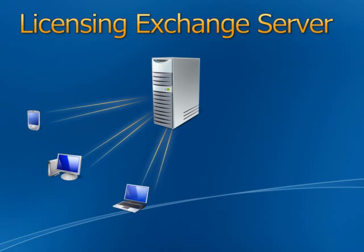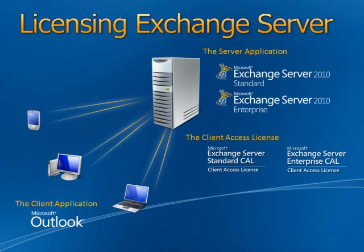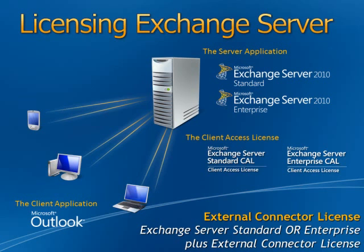Exchange Server is licensed following our normal Server-CAL licensing model. At the server end, you would need to purchase either an Exchange Server Standard Edition or an Enterprise Edition license, and assign that to the server running Exchange. The client to Exchange is Outlook, so for any device using Outlook to access Exchange, that would need an Outlook license, which can be acquired through the Office Suites — Office 2010 Standard or Professional Plus Edition already includes the Outlook license. CALs are required, and Exchange Server has both Standard and Enterprise CALs. You would need to purchase either just the Standard or both the Standard and Enterprise CALs, based on what functionality you want to access. There is also an external connector license to license non-employees to access the services of that server.